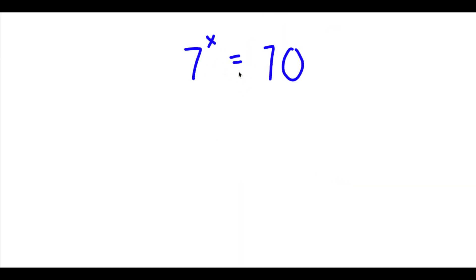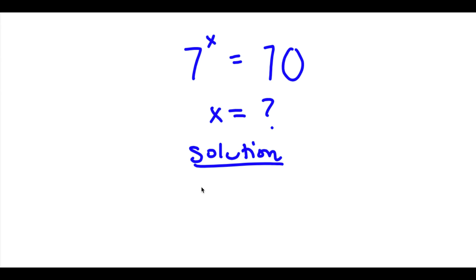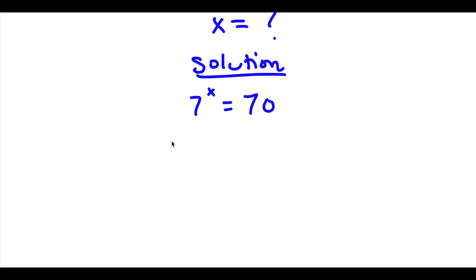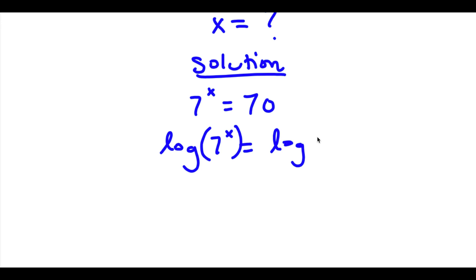Alright, so I have 7 to the power of x is equal to 70, and now I want to solve for the value of x. For my solution, I'm going to take the log on both sides. So now I have log 7 to the power of x is equal to log 70.